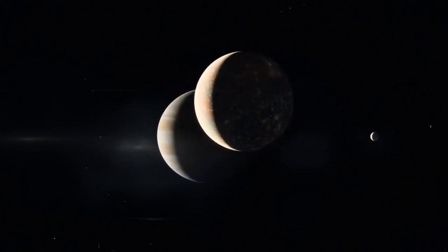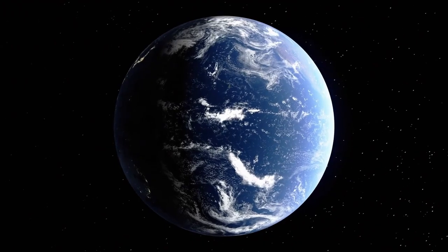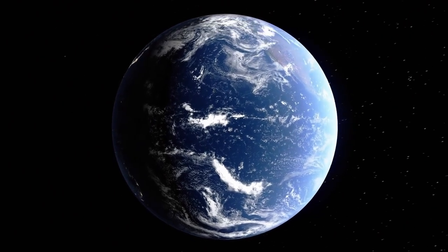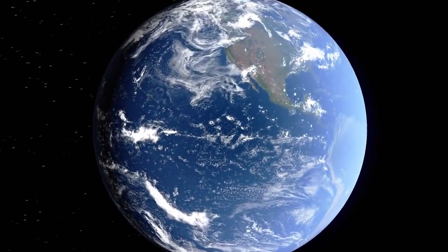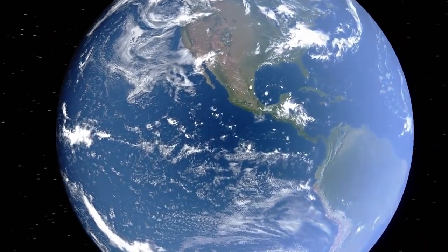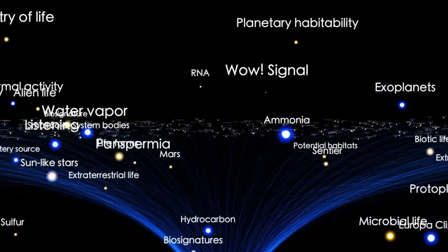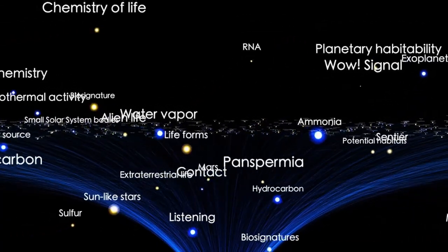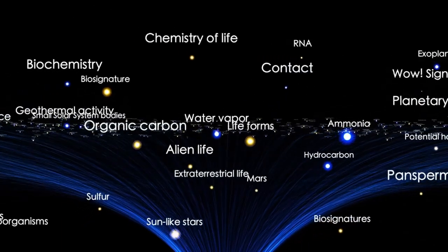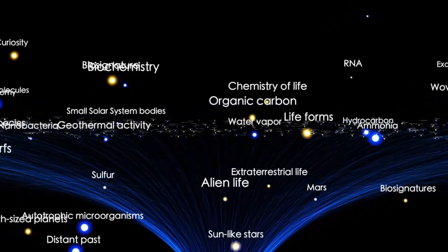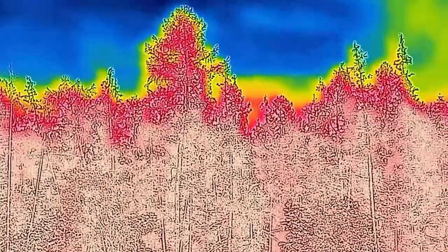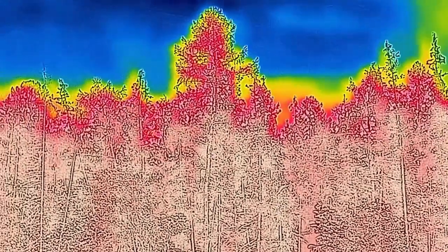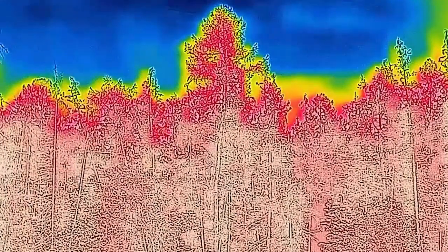The broader implications are vast. That Webb can capture an image with this degree of clarity of a planet just four light years away transforms direct imaging from a distant dream into an approaching norm. And this wasn't a blurry infrared impression of a gas giant—it was a focused capture of a rocky exoplanet, delivering data so detailed that scientists can analyze topography, heat distribution, and even cloud patterns.